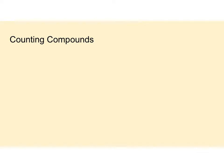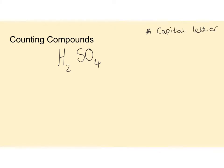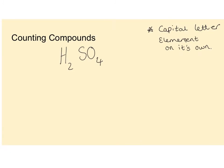Now we're going to do a little recap on how we count compounds, and then we'll have a go at calculating molecular mass. Take the compound H2SO4. When we count compounds we look for the capital letter - if it's a capital letter it's an element on its own. So we've got capital H, capital S, capital O.